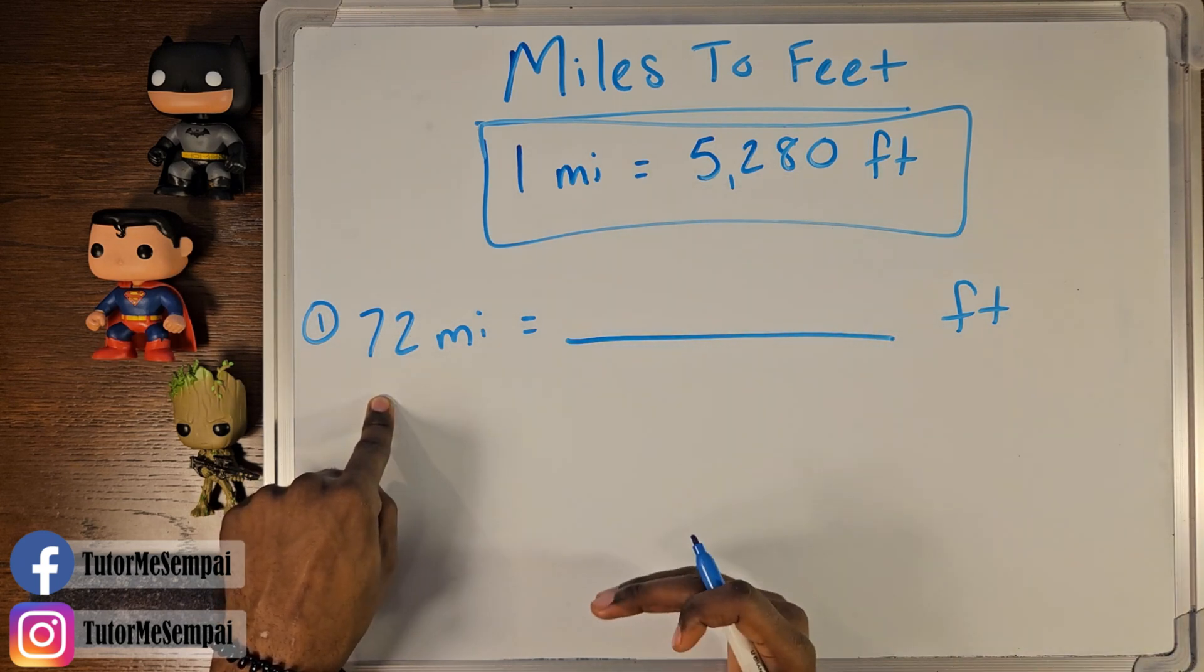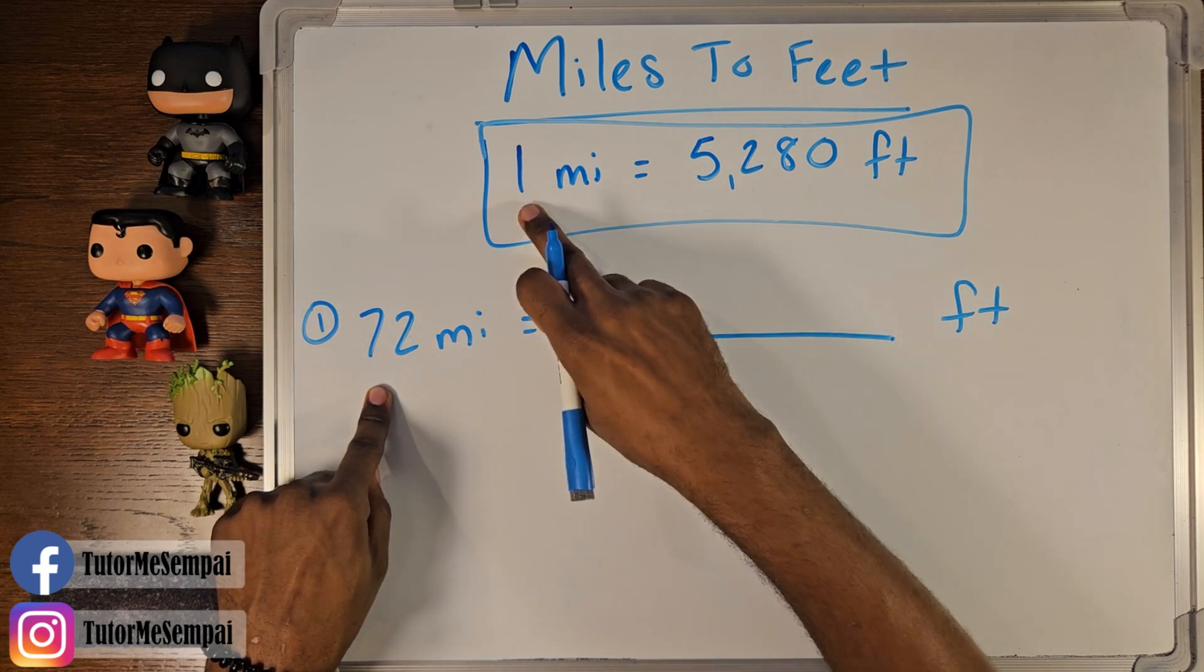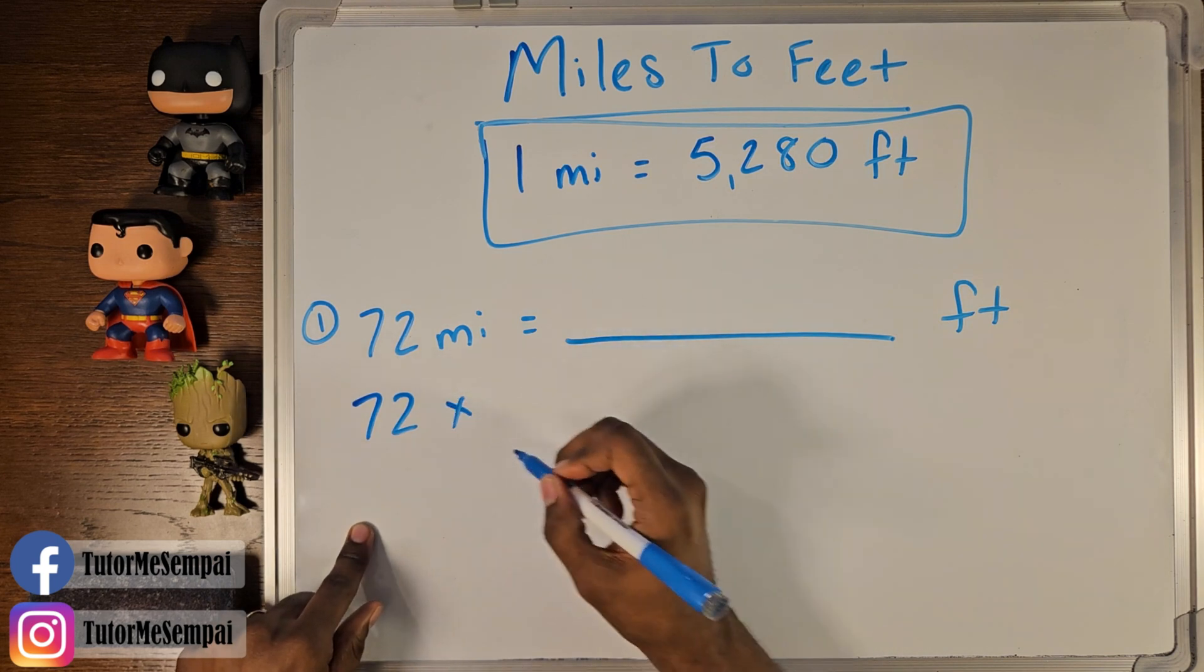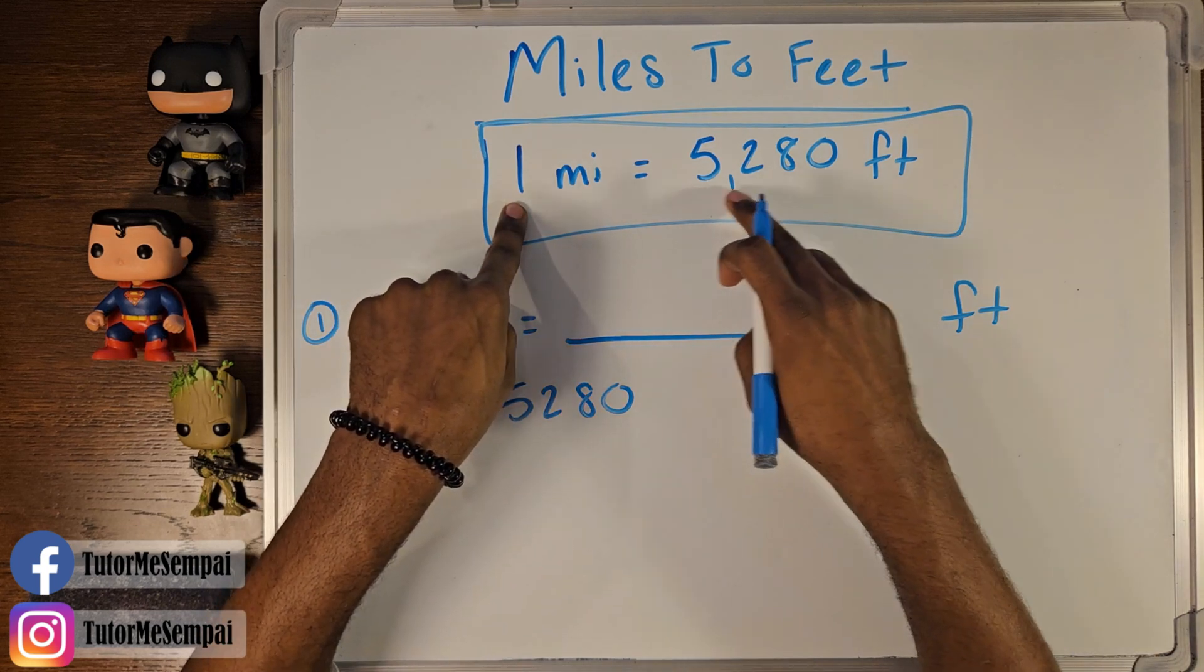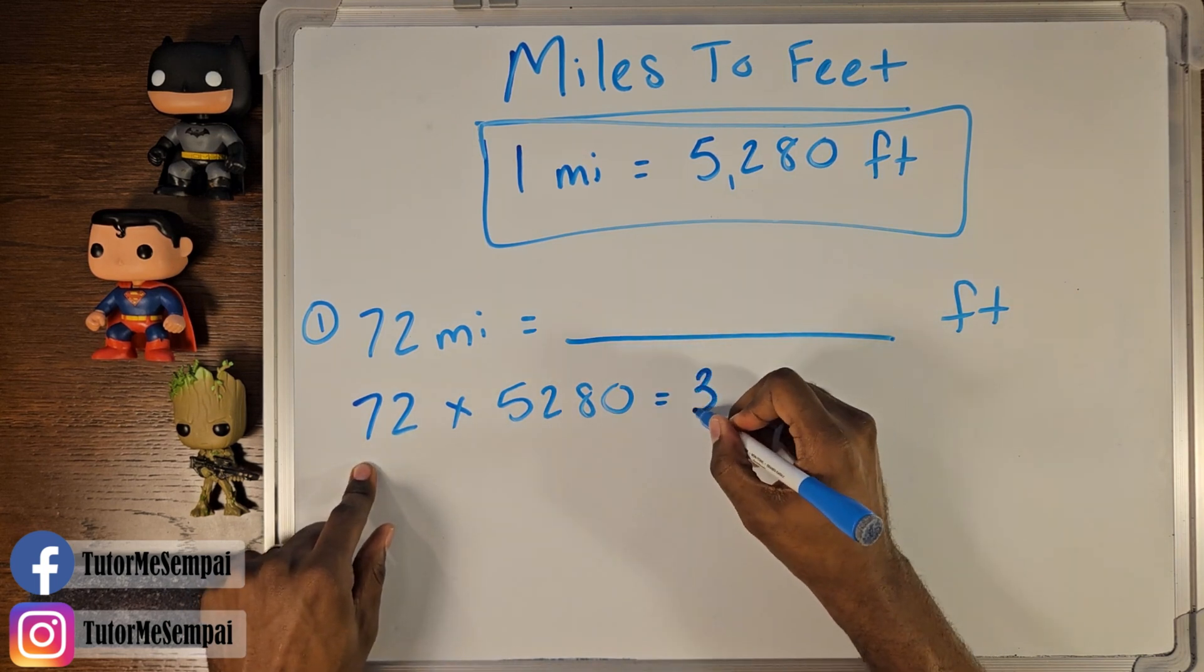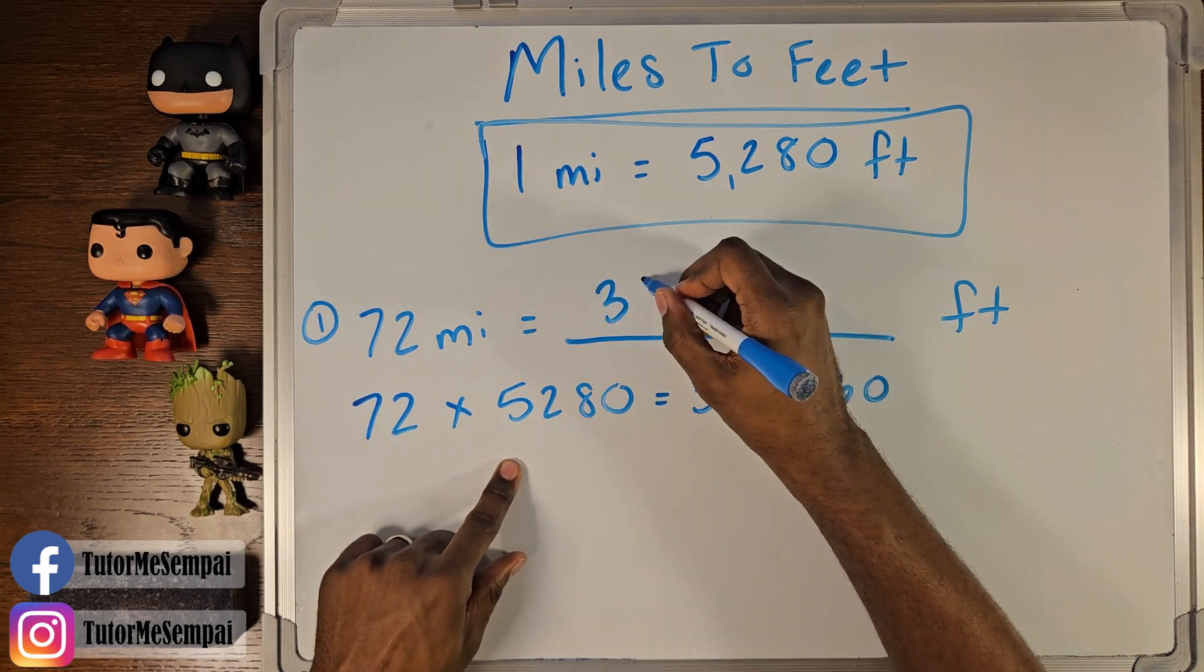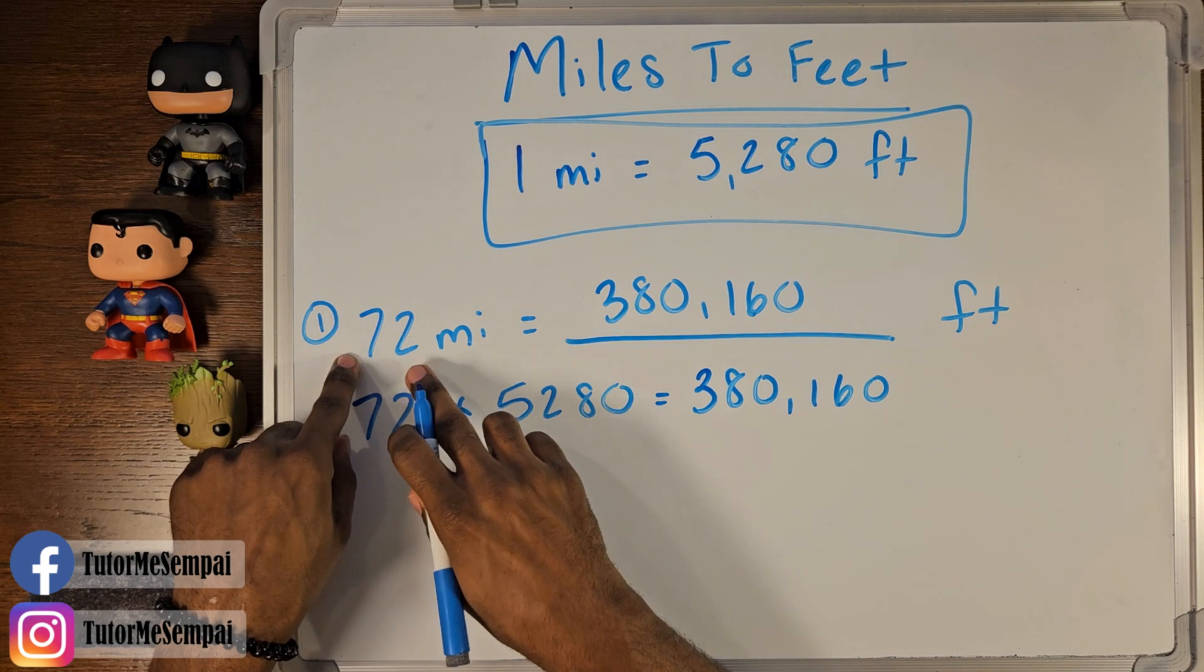Well, a better question is, how do we find the number of feet we're going to have? Well, 72 miles, each mile being 5,280 means that we're going to multiply this 72, multiply the 72 by your 5,280. If each mile is this amount, you have 72 of them. So you're going to have 72 times this amount. And when we do that, we're going to get 380,160. This is going to be how many feet we have. Remember, we're trying to find our feet here, how many feet we have when we have 72 miles.